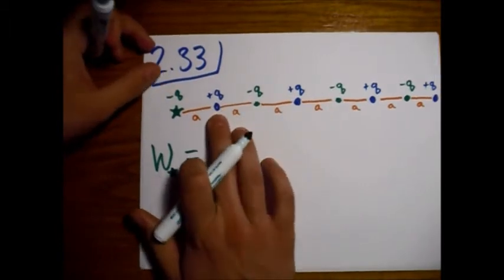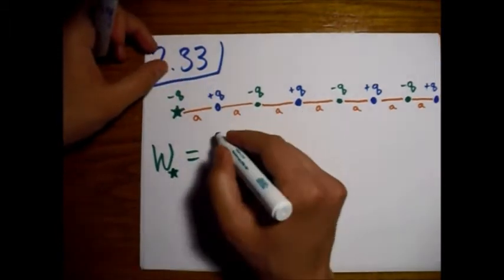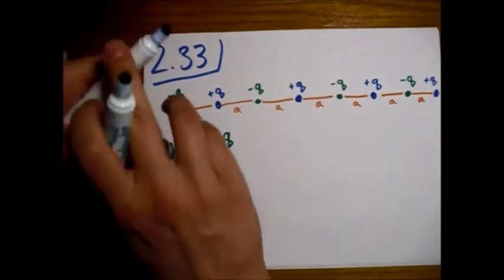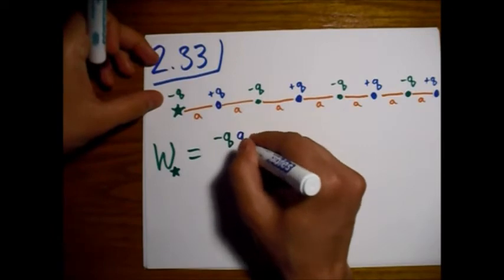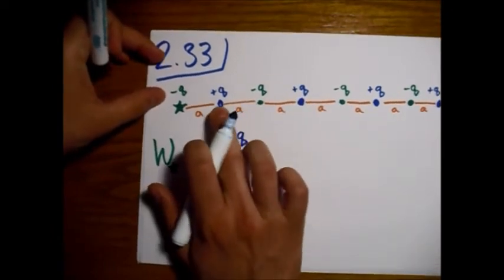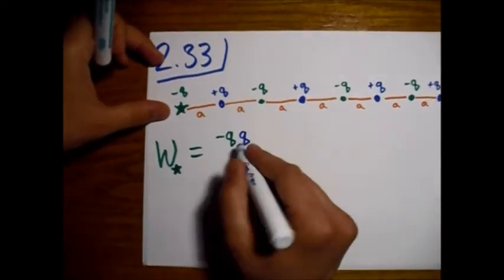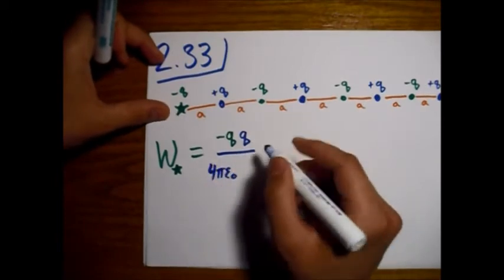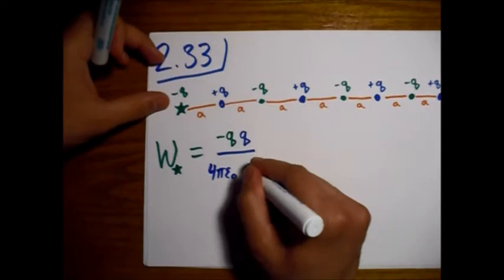So let's see, first we're going to look at this first blue one. So we multiply the charge of the one we're bringing in, and we'll multiply that by the charge of its nearest neighbor. And then we have a 4πε₀, and the distance between them is a. And they're opposite signs, so we get a minus sign here.